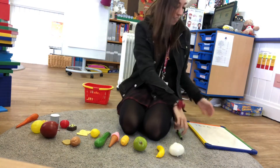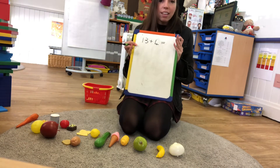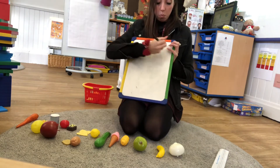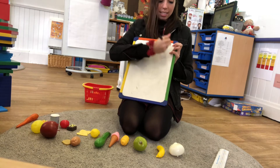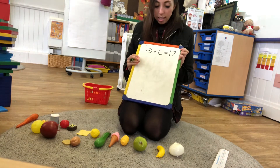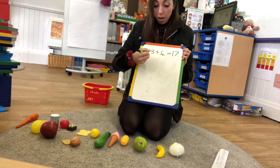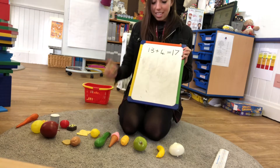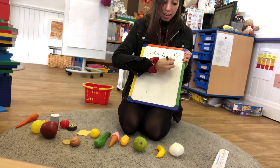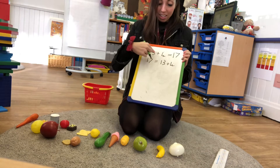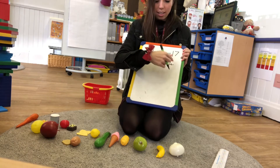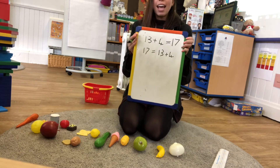So 13 and four is 17. I can now write that. How do I write 17? If you don't know, look at your number track. I know that 13 add four is 17. I could also have 17 is the same as 13 add four. Also, four add 13 is 17 — you could say it in any of those ways.